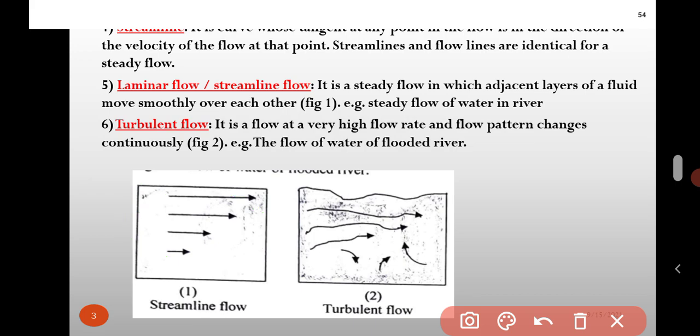Second one is turbulent flow. It is a flow at a very high flow rate and flow pattern changes continuously. Liquid molecules move randomly. In turbulent flow, all liquid molecules moves in the random motion. For example, the flow of water of flooded river.